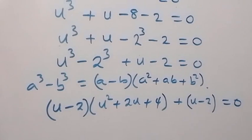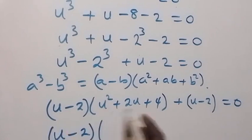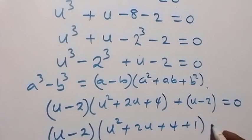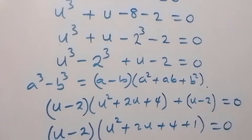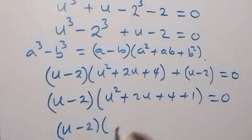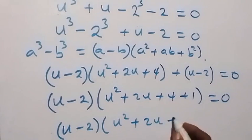We have u minus 2, and when we factor that out, we have u minus 2 into bracket u squared plus 2u plus 4, plus 1 equals to 0. This then becomes u minus 2 times u squared plus 2u plus 5 equals to 0.